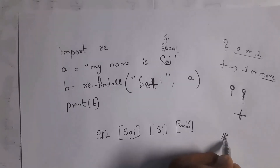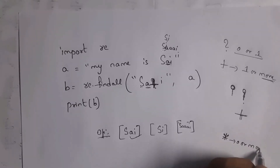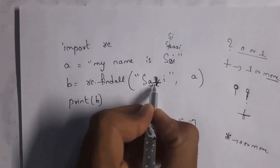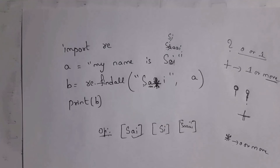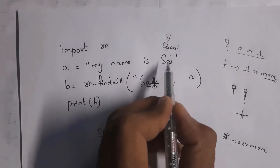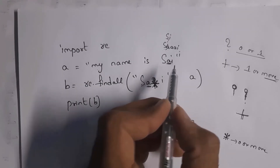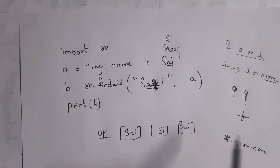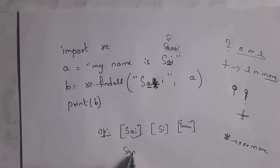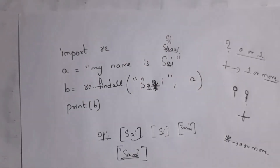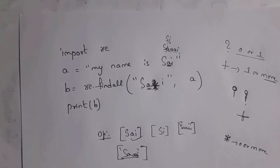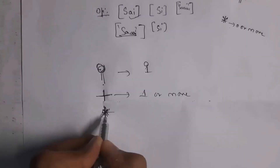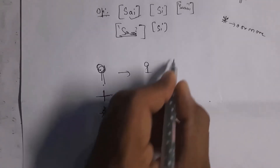The star symbol means zero or more occurrence. With pattern 'Sa*i': if A is not present in string 'Si', I still get output 'Si' because zero occurrence is satisfied. If A is present once in 'Sai', output is 'Sai'. If A is repeated three times in 'Saaai', output is 'Saaai'. So star allows zero, one, or more occurrences. You can remember: star looks like zero, so zero or more.